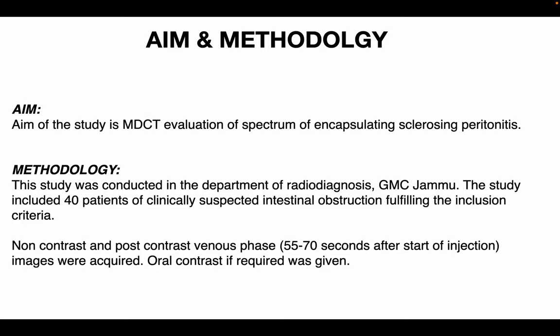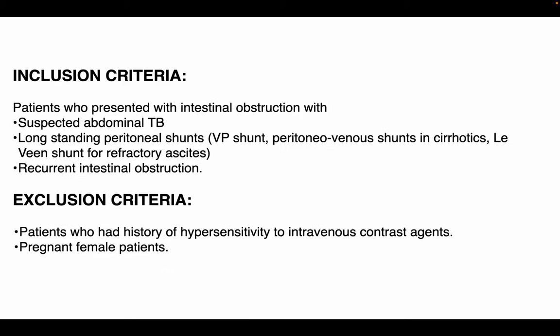The aim of the study is to evaluate the spectrum of encapsulating peritoneal sclerosis on MDCT. This study was conducted in the Department of Radiodiagnosis, GMC-JAMU, and included 40 patients with clinically suspected intestinal obstruction fulfilling the inclusion criteria. Non-contrast and post-contrast venous phase images were acquired; oral contrast was given where required. Inclusion criteria included patients presenting with intestinal obstruction, suspected or diagnosed abdominal TB cases, patients on long-term peritoneal shunts, and patients with recurrent intestinal obstruction.